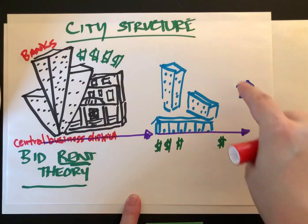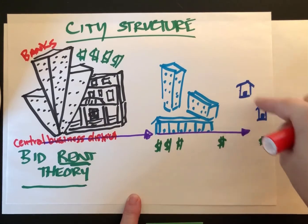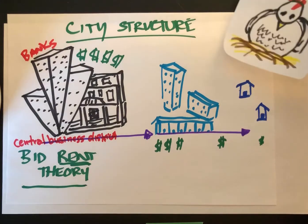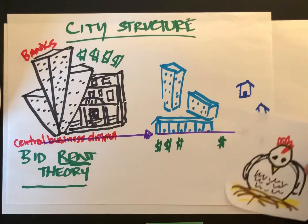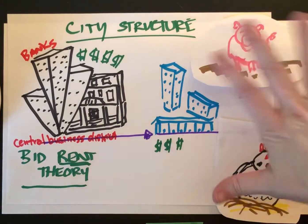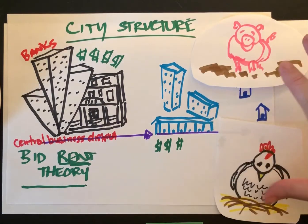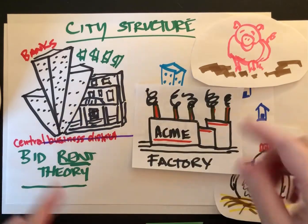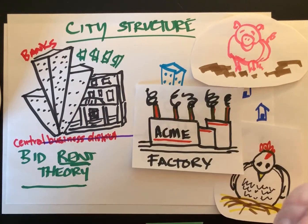As you continue to go out you start to have single dwelling homes — that could be suburbs or into the rural area. When we go truly rural, that's where we have farmland with chickens and pigs, and sometimes we have factories. The further out you go, the more affordable the land is.